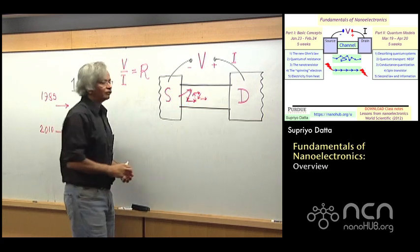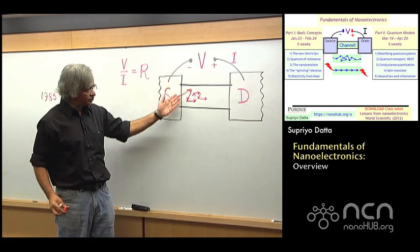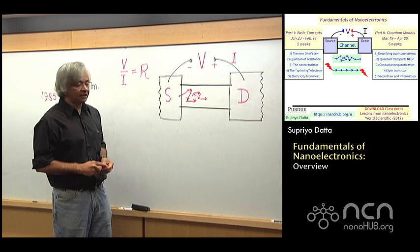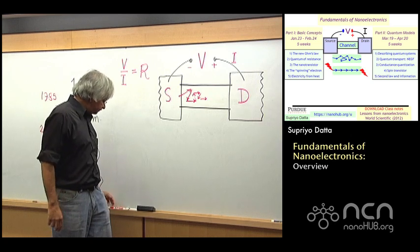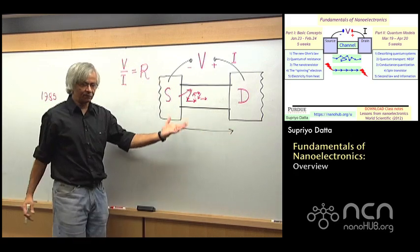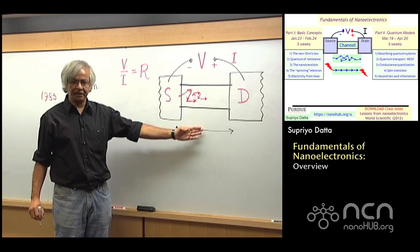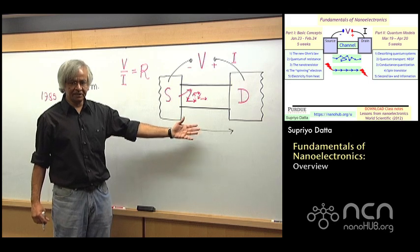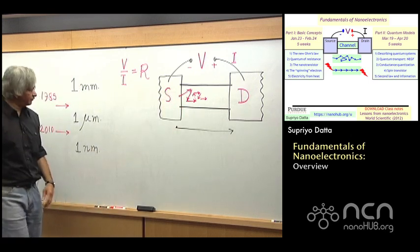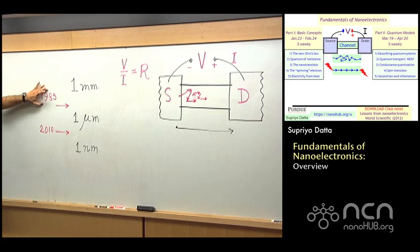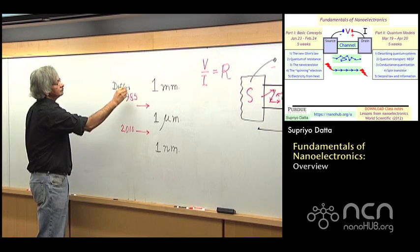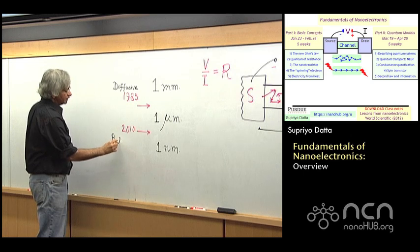So it eventually gets from source to drain, but not in a straight path. It zigzags its way, like a random walk. That's the technical name. Whereas today's devices are now small enough that electrons essentially go through like a bullet from one end to the other, almost. The smaller the device is, the more correct this picture would be. The technical name for that is ballistic transport.